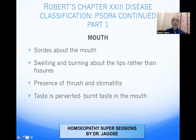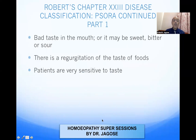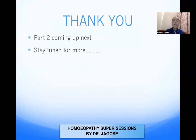In the mouth, you get sores around the mouth. The mouth and lips are dry and cracked, with swelling and burning around the lips rather than fissures. There is presence of thrush and stomatitis. The taste is perverted and there is a burning taste in the mouth. There may also be a bad taste — sweet, bitter, or sour. Patients are very sensitive to taste. That concludes this part; the next part will cover GIT symptoms onwards.